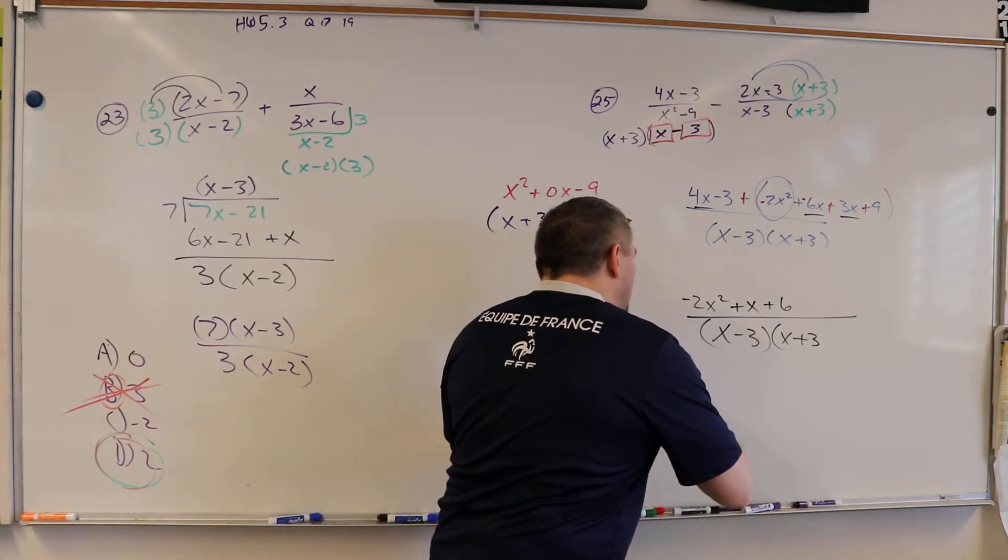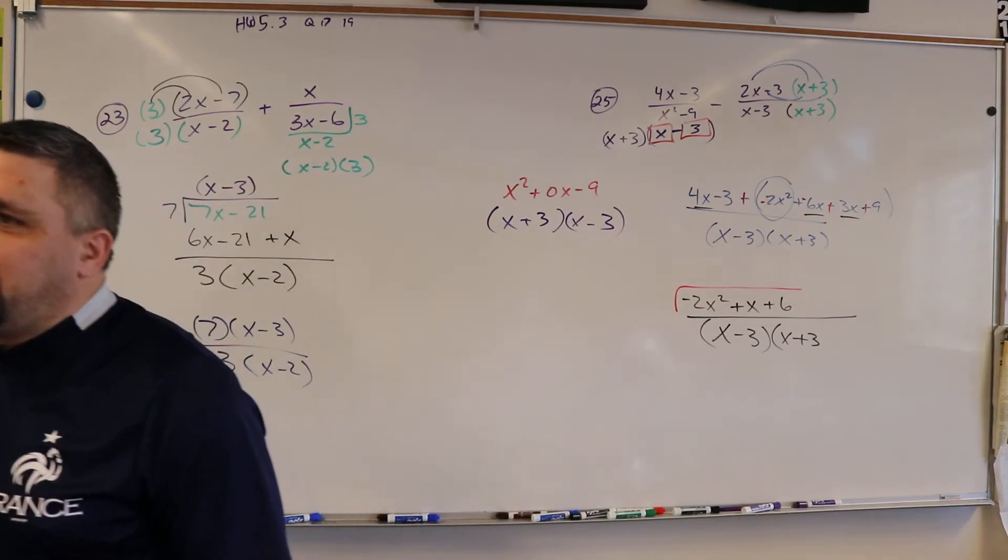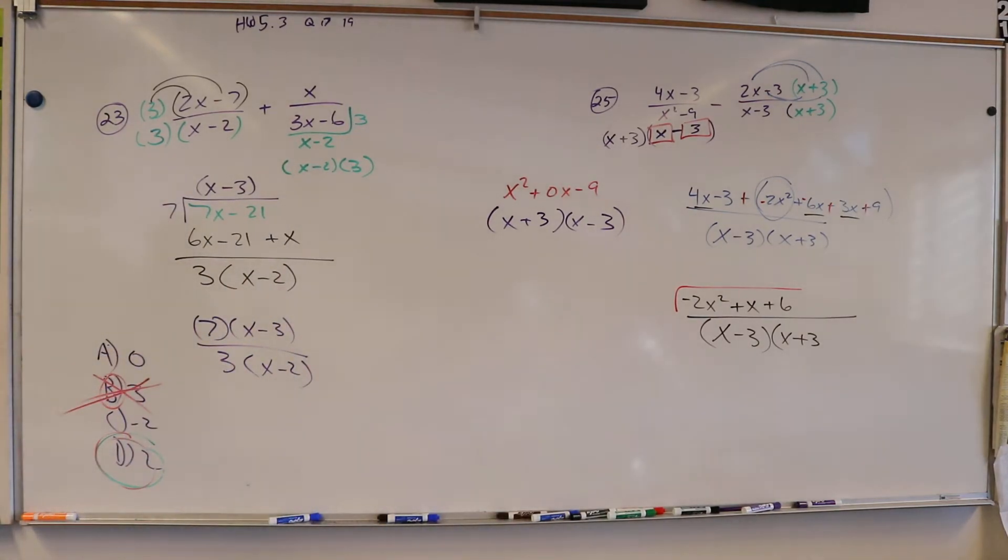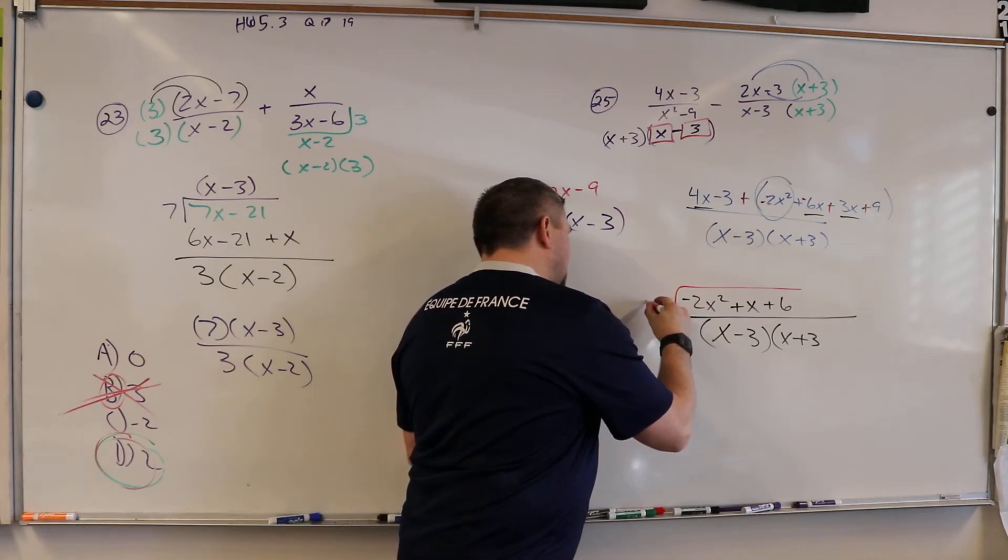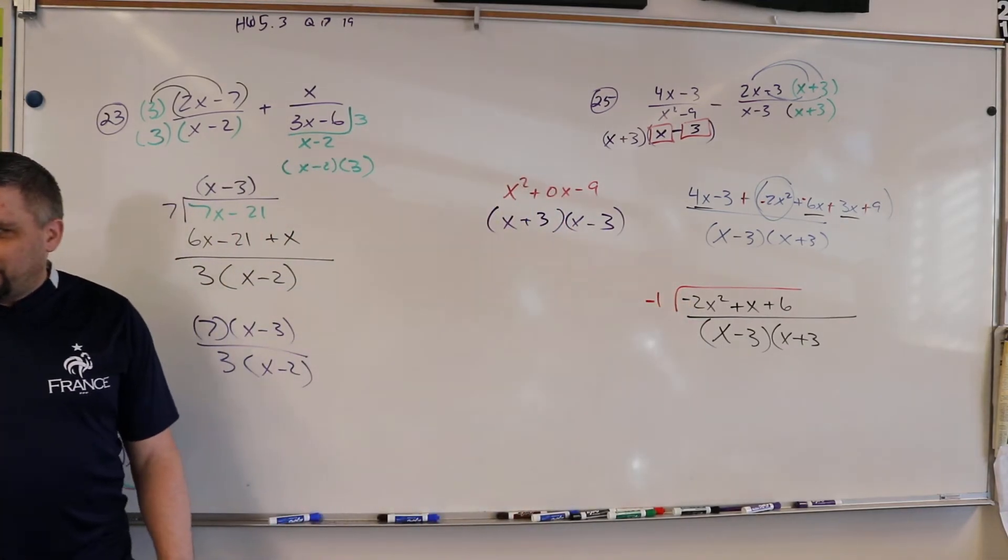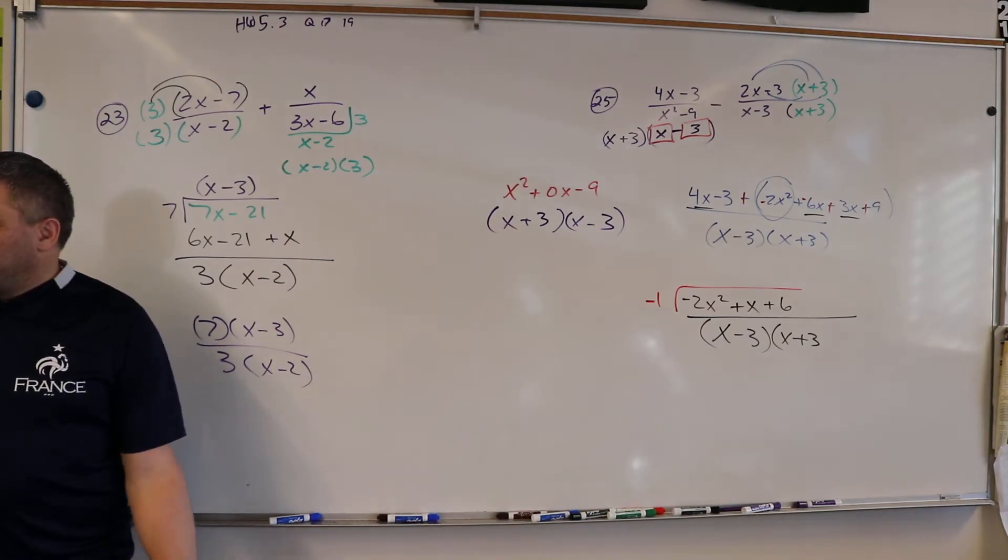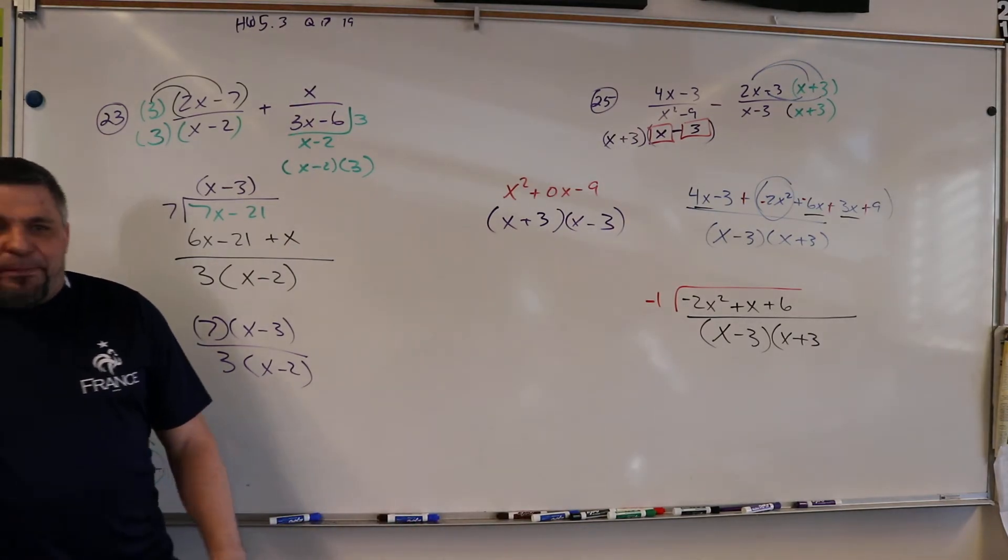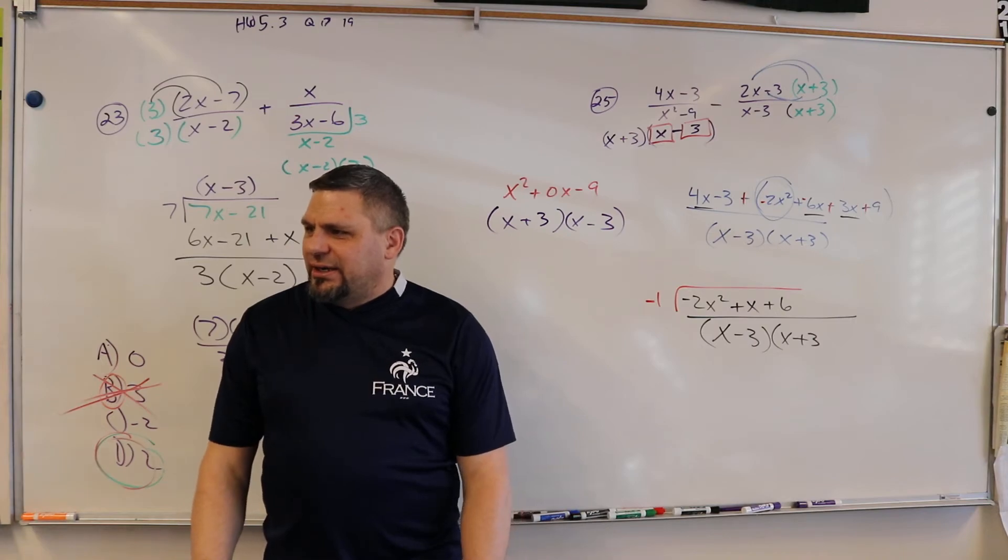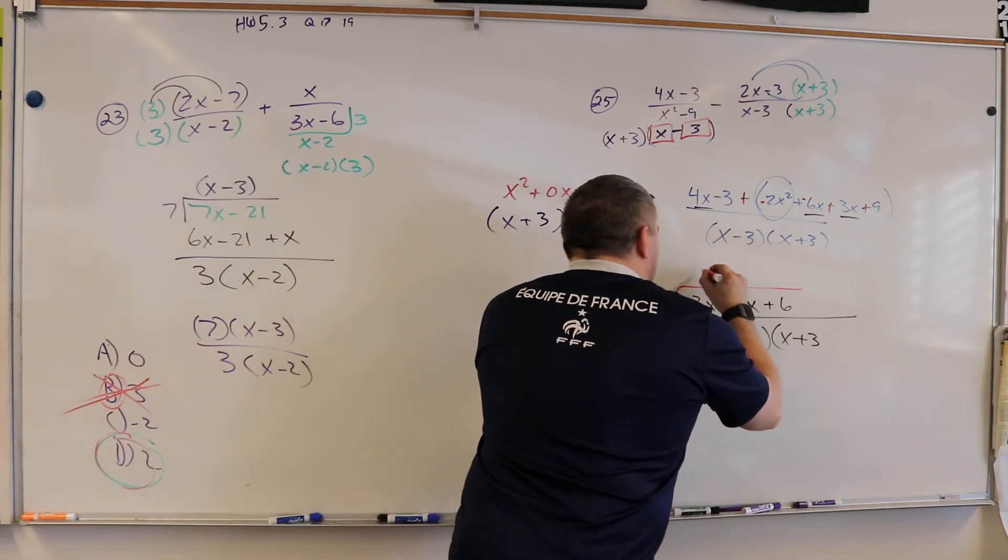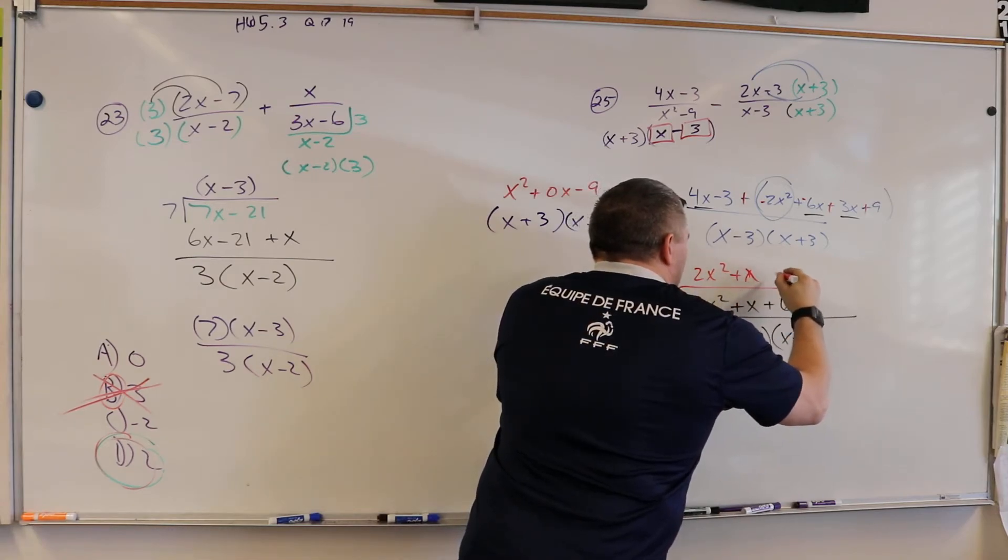What do I take out? What is the GCF? Minus 1, right? Yeah. Because only 1, but we don't like it negative out in front. It's not easy to deal with that factoring, right? So we're going to pull out a negative. That's going to give us 2x squared minus x minus 6.